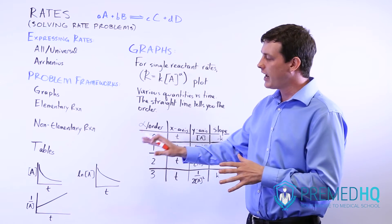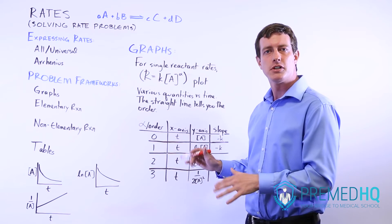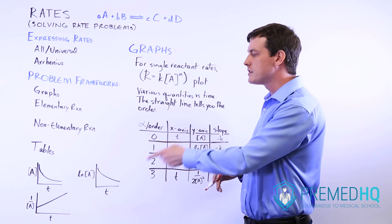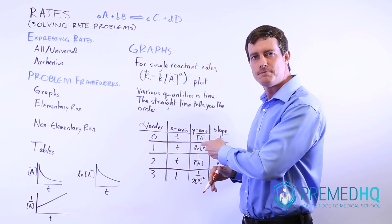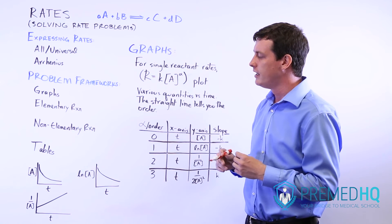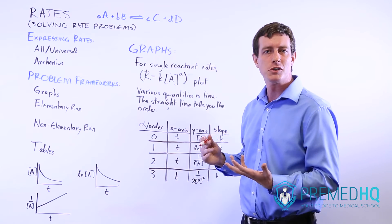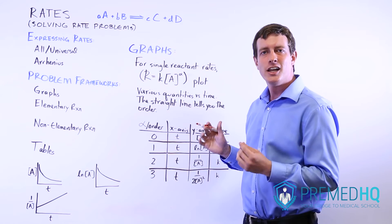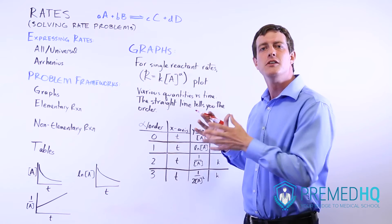This can be tested as a graph. And that's a definite possibility that you encounter a graph like this, and you just see which one yields a straight line. It could also be tested in a simple written question where they say something is second order with respect to reactant A.